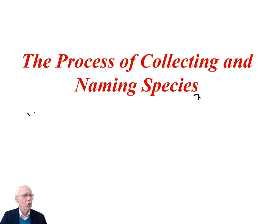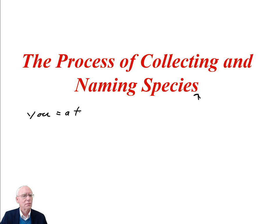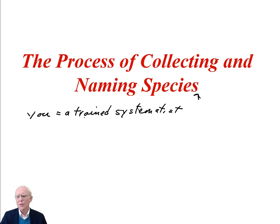We're going to start with a description of the process that we use when we collect and name a new species. Let's just say that you are out there in the field and you're a trained botanist. You already know all the things that you would do in this course, plus you've been working in naming species for a number of years. Let's call you a trained systematist. And you're out there in the field, perhaps in the tropics where not too many other people have been, and suddenly you see something unusual — specifically, a plant.